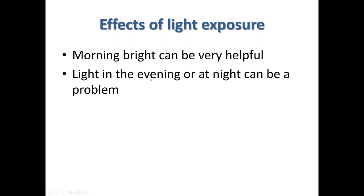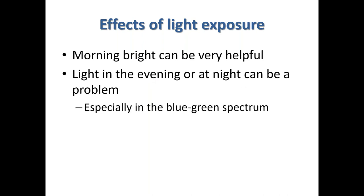However, light in the evening or at night can be a problem — particularly blue-green light. At night, our brain produces the hormone melatonin, and exposure to bright light at night, especially blue-green light, suppresses melatonin production. Melatonin is important for regulating sleep. So maximize morning light exposure and minimize evening light exposure. This doesn't mean sitting in a dark room, but avoid having very bright room lighting on for about an hour before bed.